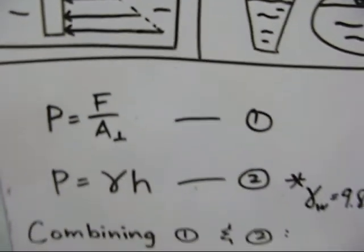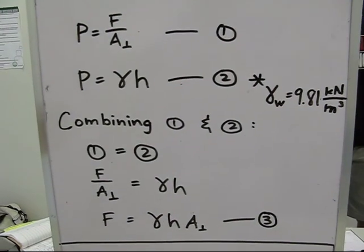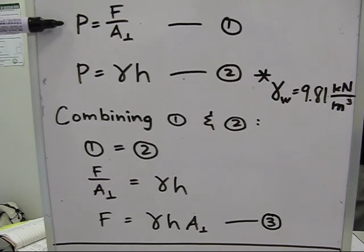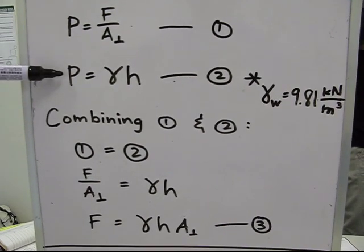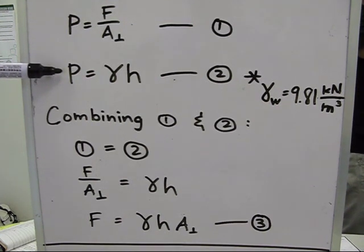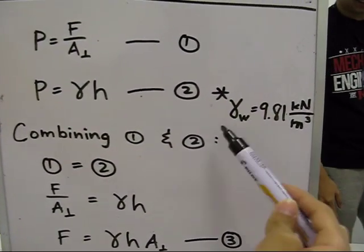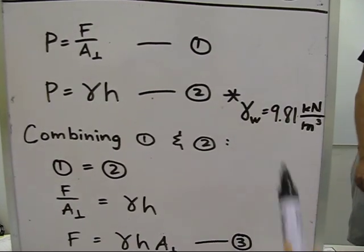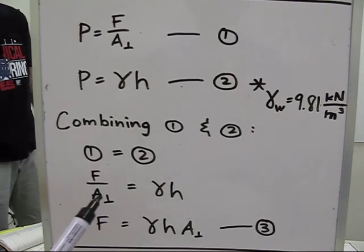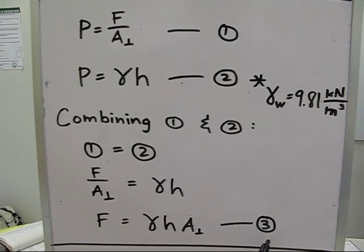For horizontally placed materials relative to the free surface, the equation for pressure is equation number one, which is equal to force over the perpendicular area of the pressure. For materials that is submerged at an angle relative to the free surface, the equation for pressure is equal to specific weight, or gamma, times the height. And take note that the specific weight for water is a constant value, which is 9.81 kilonewtons per meter cubed. If we combine equations one and two, we can derive an equation for the force. The equation for the force would then be equal to gamma times H times the perpendicular area.